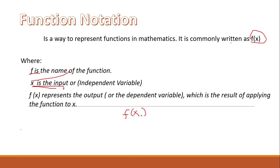This represents the output or the dependent variable; x represents the independent variable. Bear in mind that when solving something like f of 5, you should not multiply 5 times f — that is a common mistake to avoid.